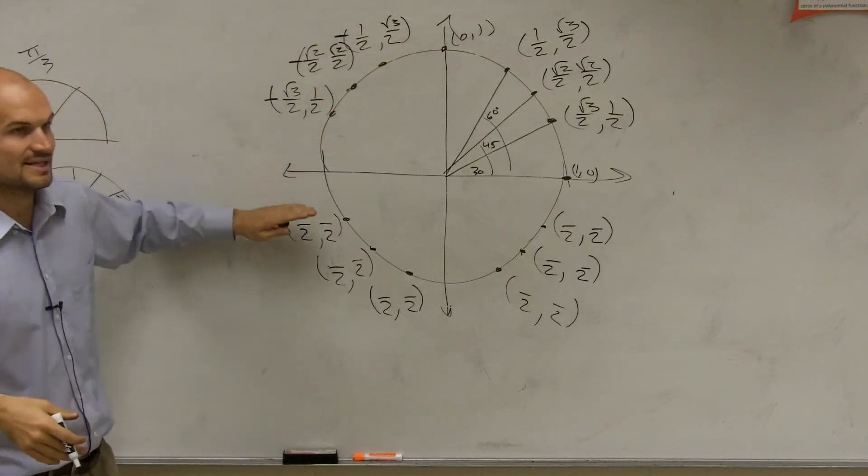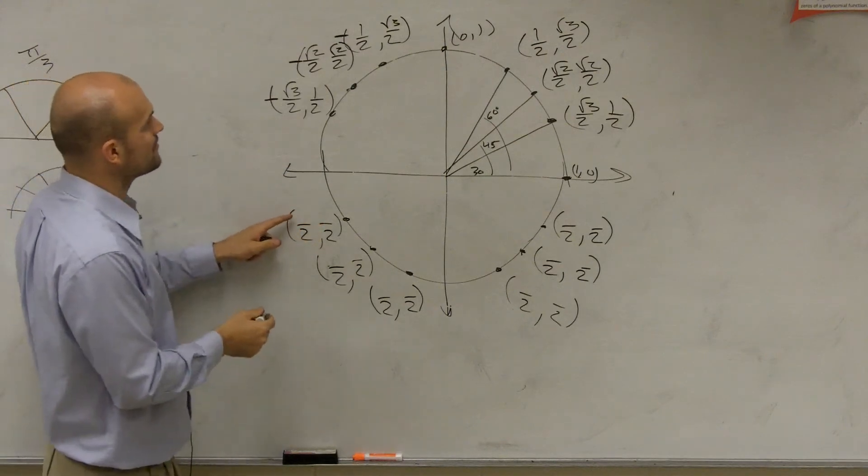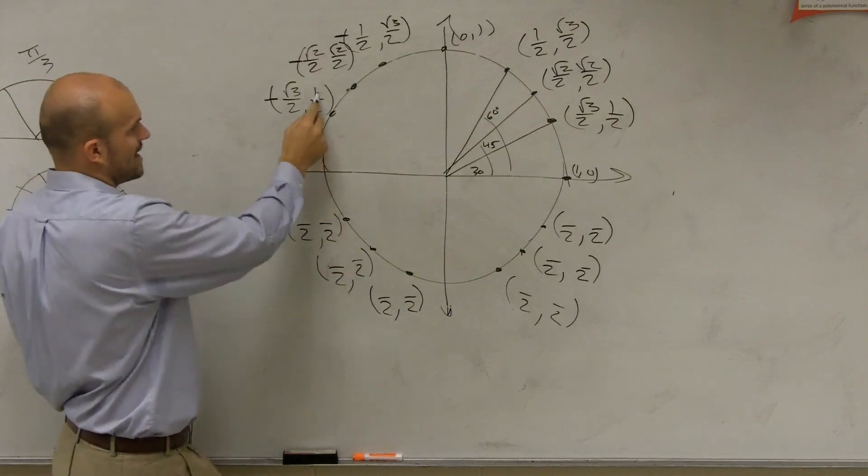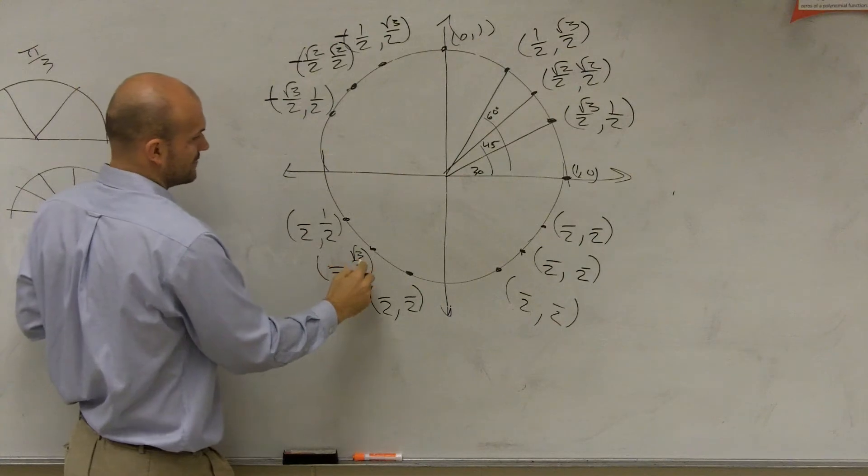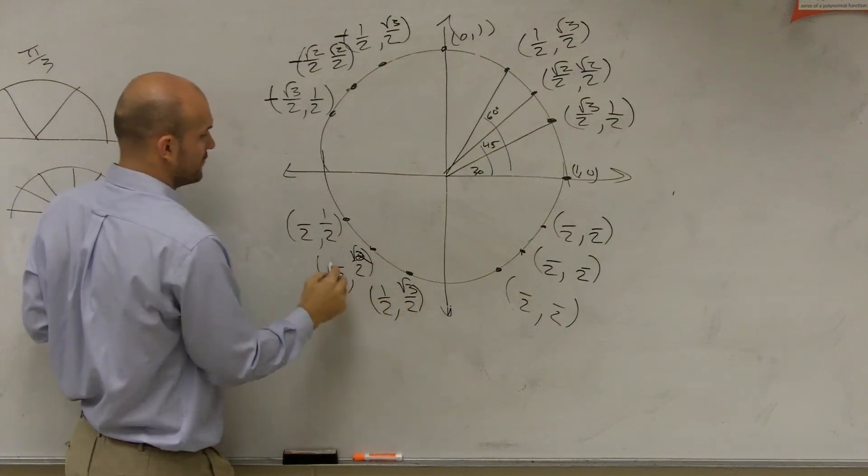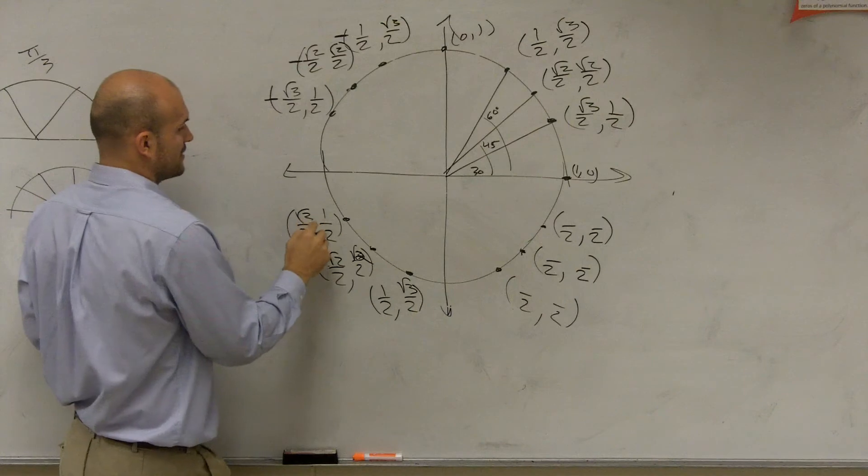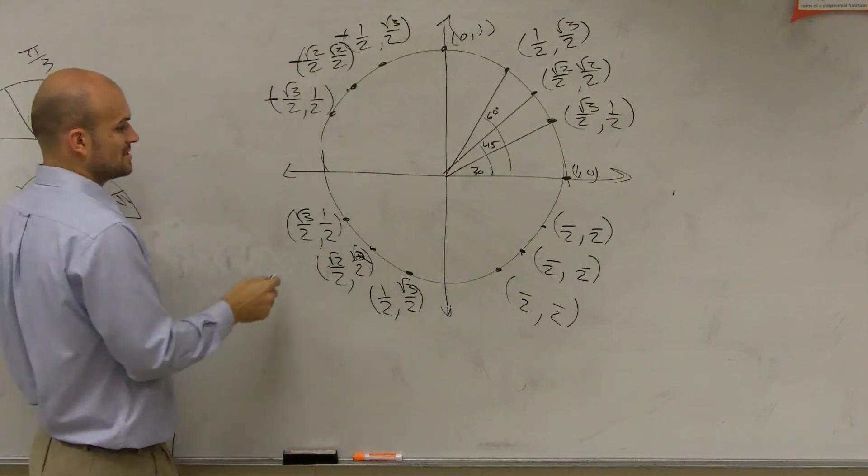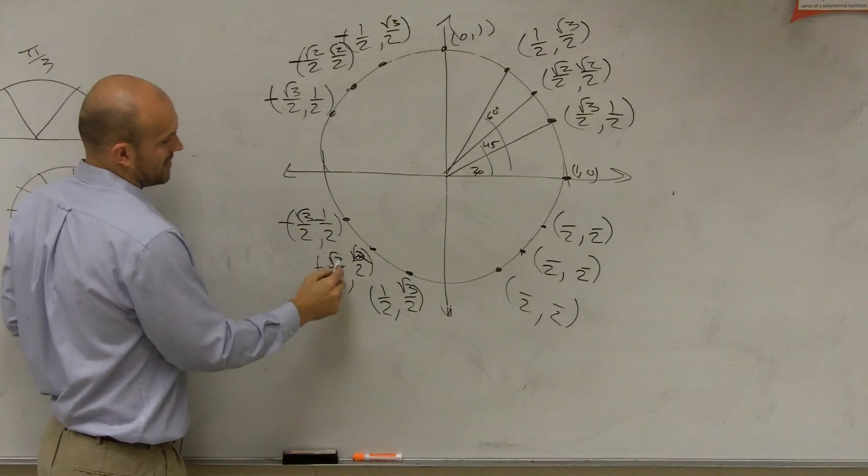Now, it's going to be the exact same thing, but now I have square root of 1, square root of 2, square root of 3. Square root of 1, square root of 2, square root of 3. But now I'm in the third quadrant, so what's negative? Both of them.